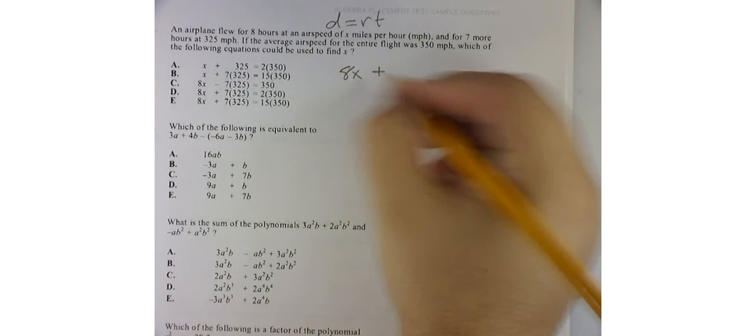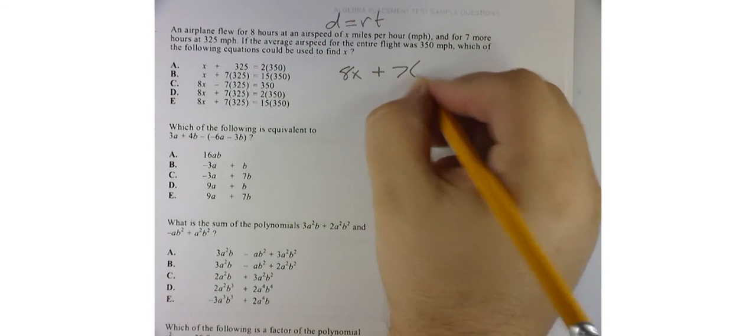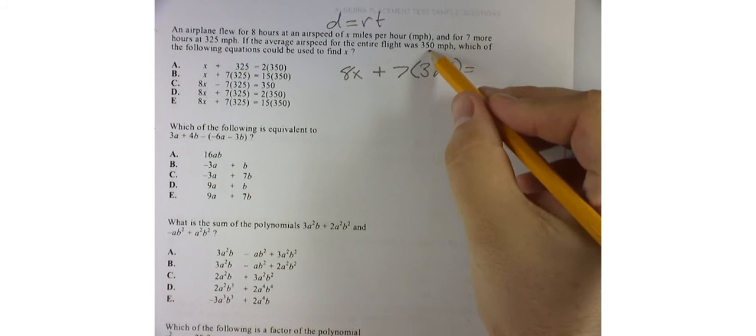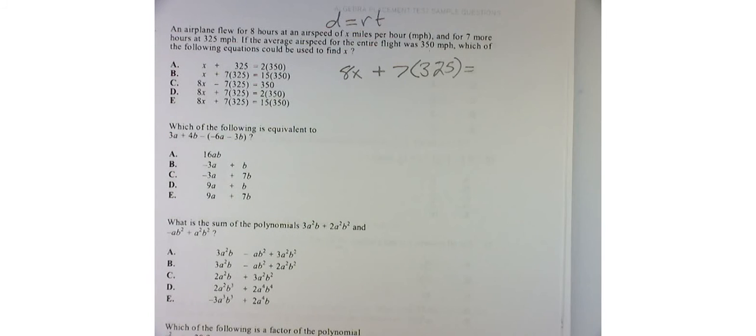Plus 7 times 325, whatever that number is, should equal an average of 350 miles per hour.